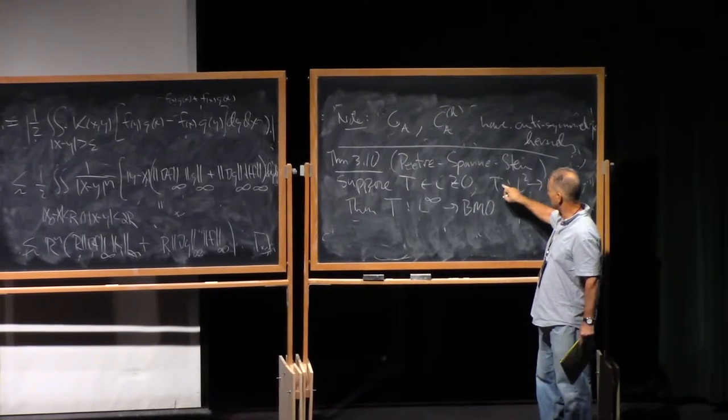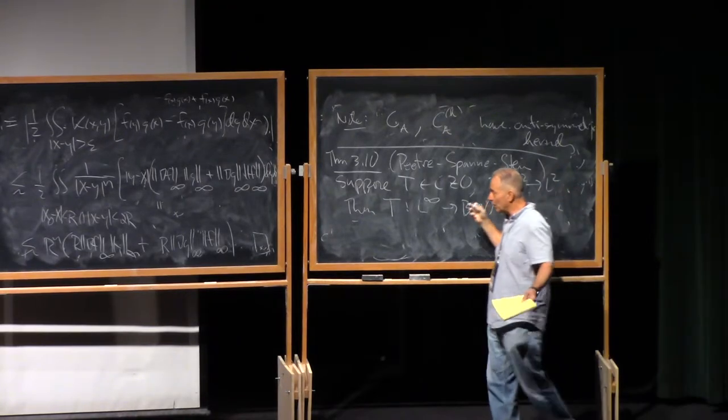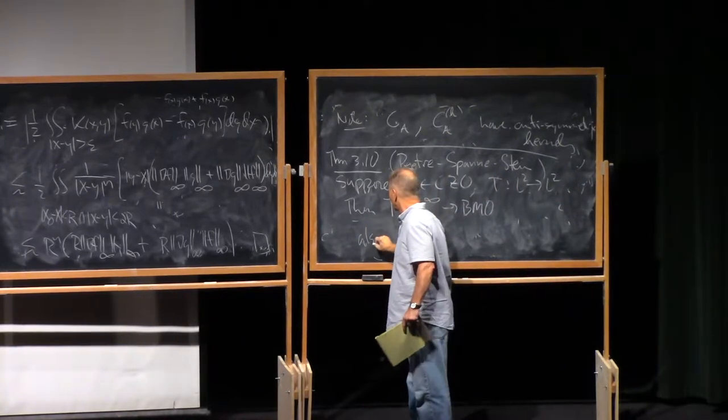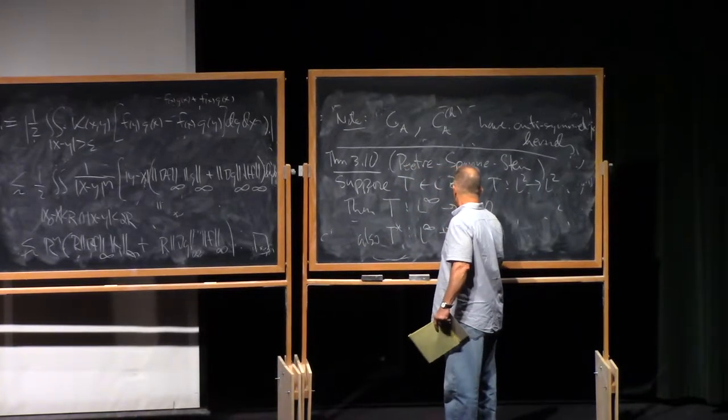And just a comment, of course, just basically Hilbert space theory tells you that if T is bounded on L2, then so is T star, and so then also T star maps L infinity to BMO.